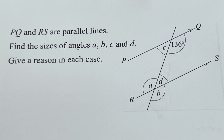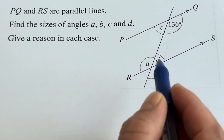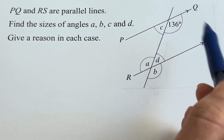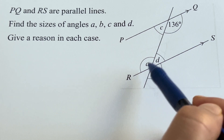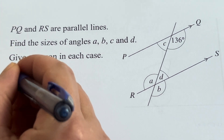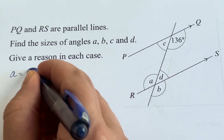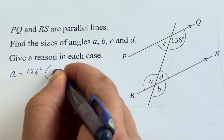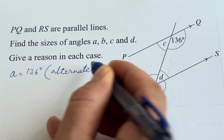PQ and RS are parallel lines. Find the size of angles A, B, C, and D, giving a reason in each case. Angle A and 136 degrees are alternate angles, so A equals 136 degrees — alternate angles are equal.